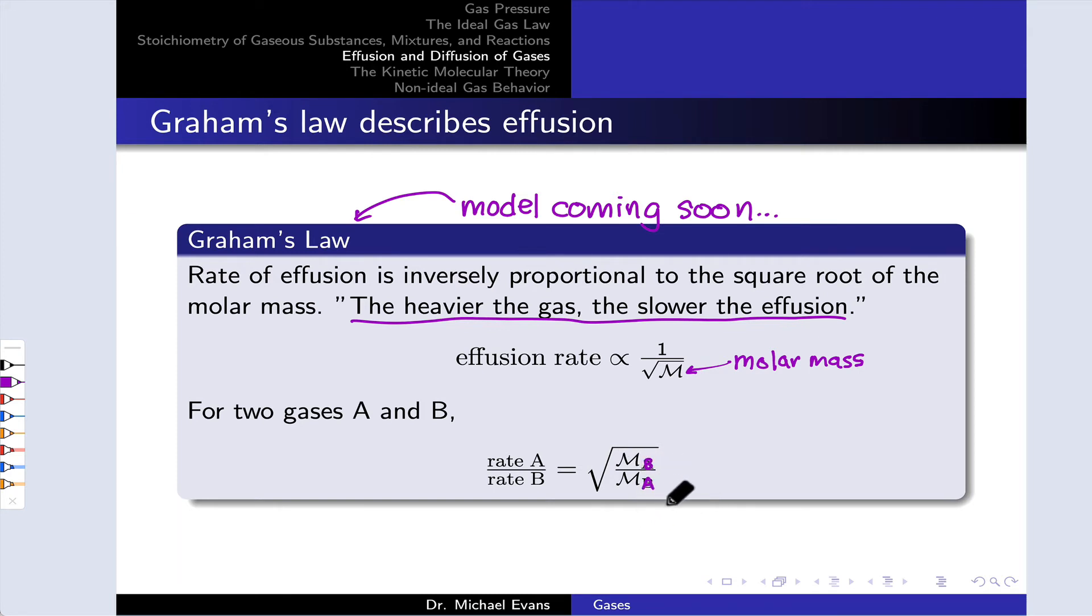And that's key, one over the square root of molar mass, right? So watch out for these symbols. The molar mass of A shows up in the denominator since its rate is in the numerator, and the molar mass of B shows up in the numerator because its rate is in the denominator on the left-hand side.